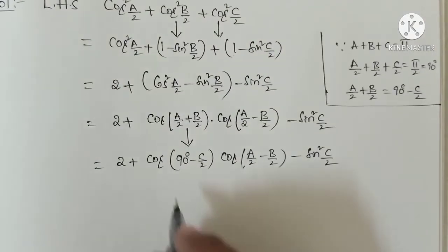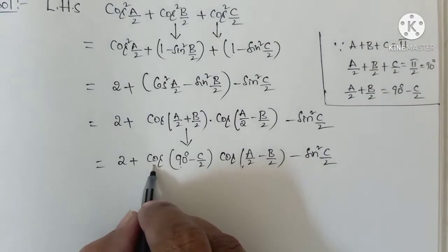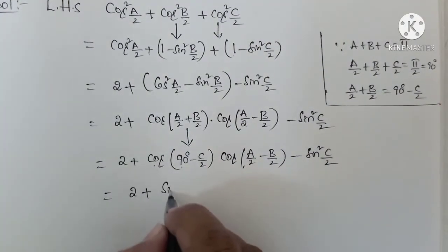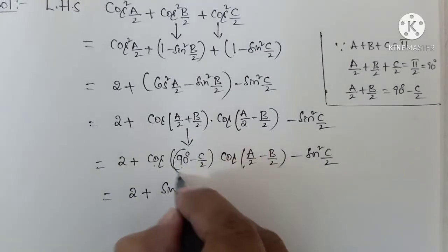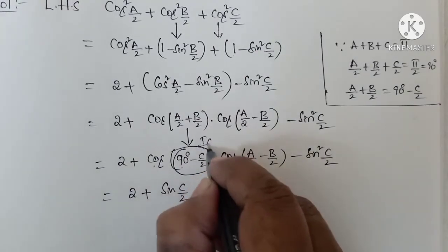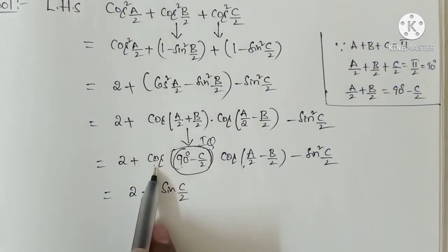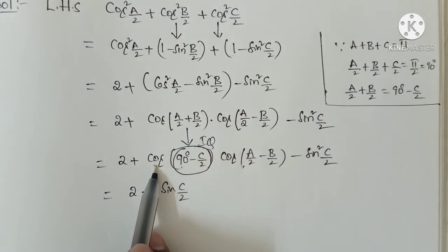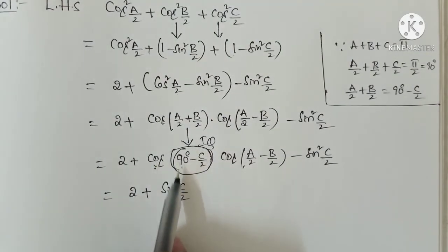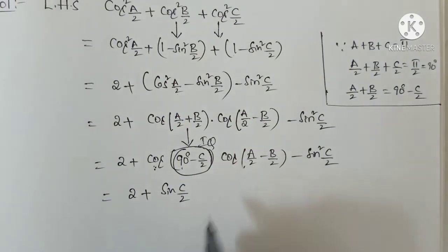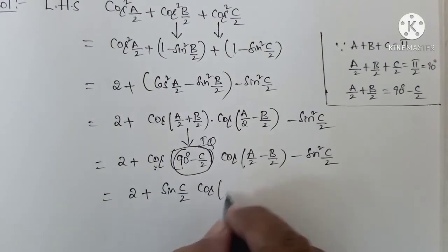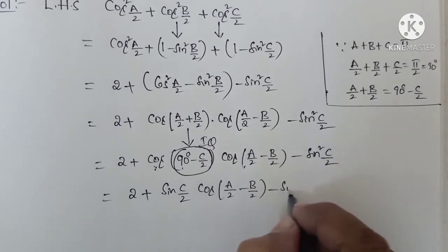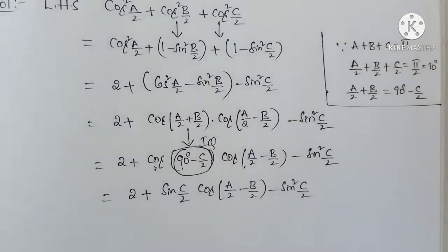When there is 90 degrees, cos will be converted to sin. So cos(90 minus c by 2) becomes sin(c by 2). Since 90 minus theta is in the first quadrant, all values are positive. So cos is also positive and converts to sin c by 2. This gives 2 plus sin c by 2, into cos(a by 2 minus b by 2), minus sin squared c by 2.